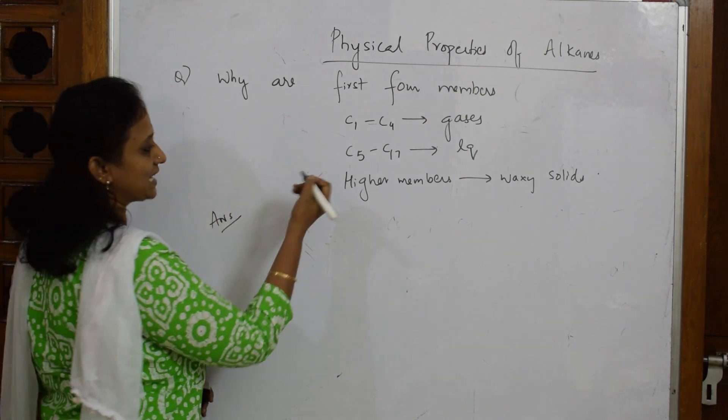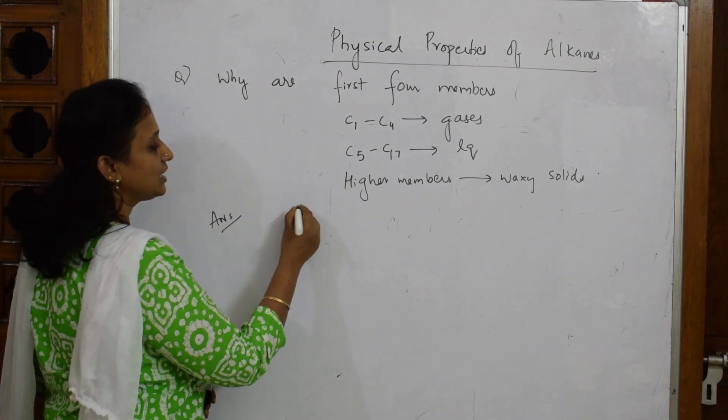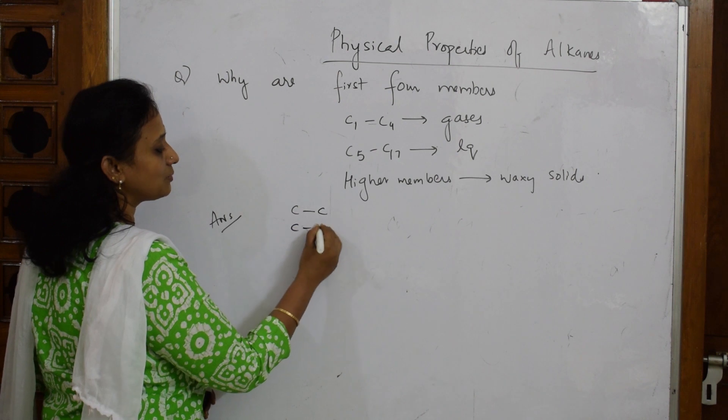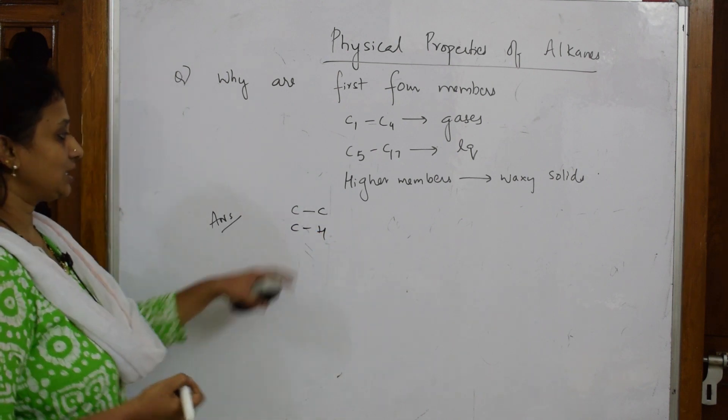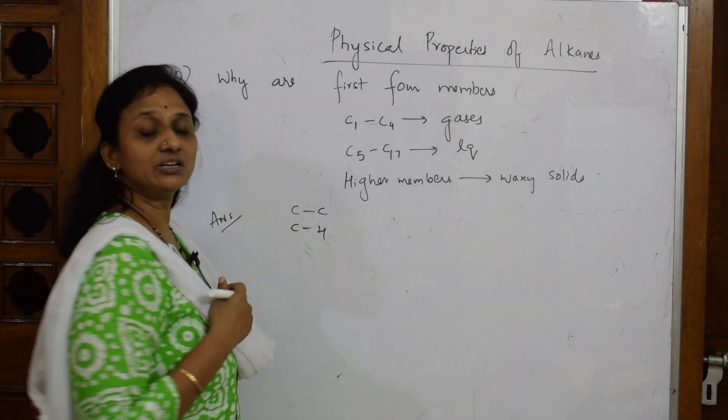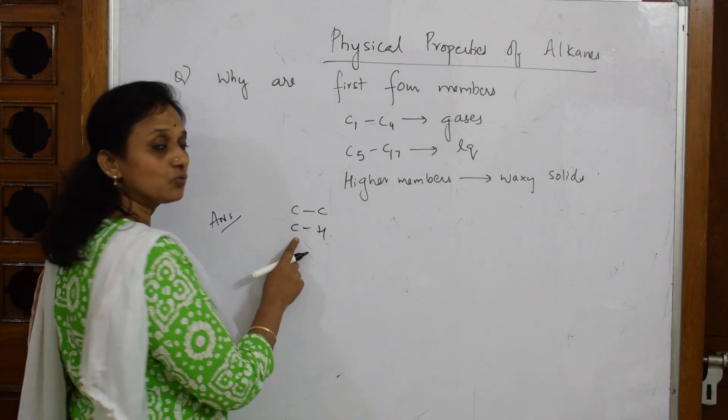First of all, whenever I speak about alkanes, what bonds do they have? They have carbon-carbon bond and carbon-hydrogen bond, right? When I have to see the electronegativity difference between carbon and hydrogen, what is the electronegativity?